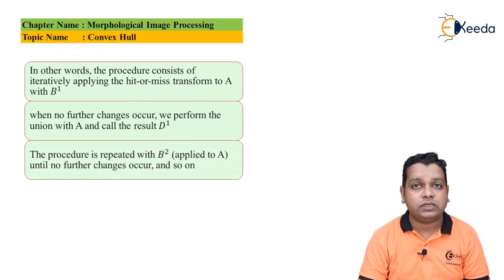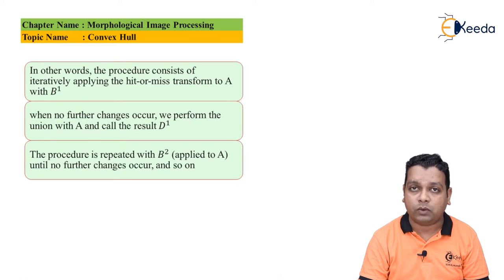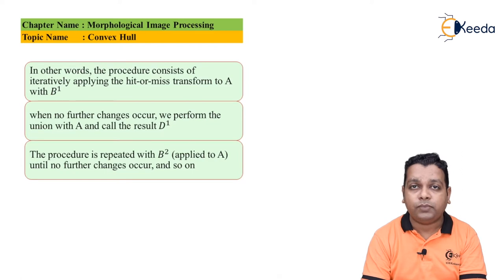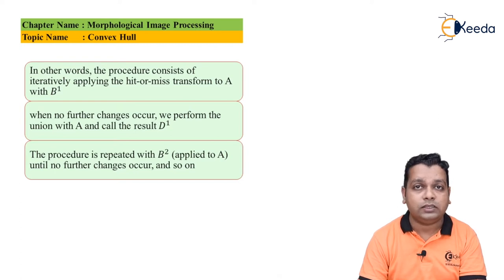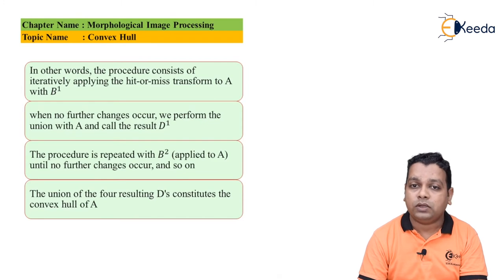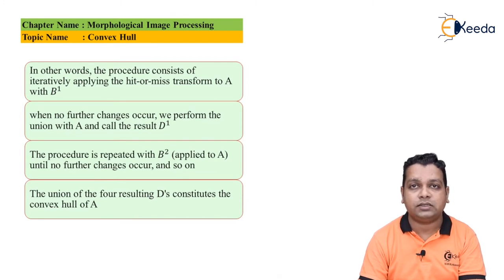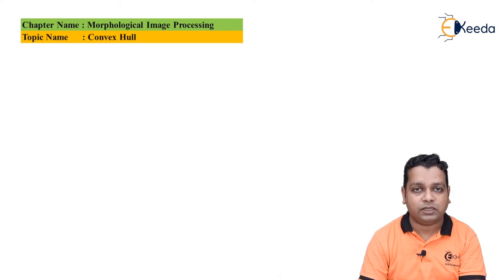The procedure is then repeated with B^2, the second structuring element. We apply the second structuring element to set A until no further changes occur in the result. The union of the four resulting D's constitutes the convex hull of capital A.